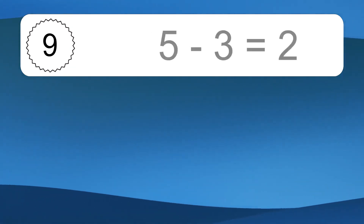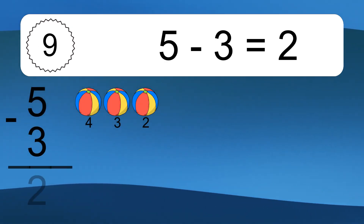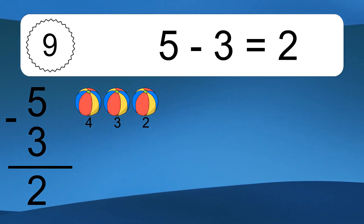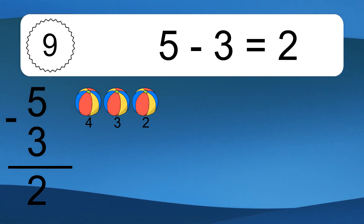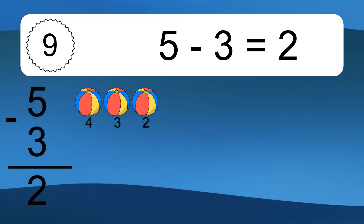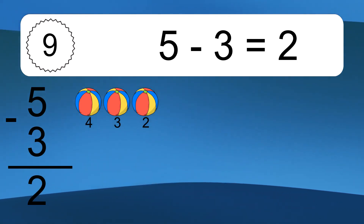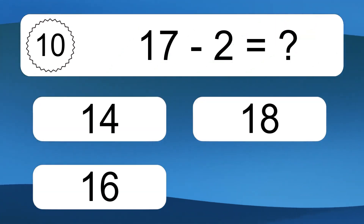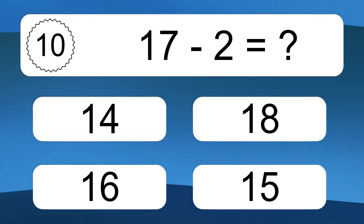5 minus 3 equals 2. Let's count it. 4, 3, 2. 17 minus 2 equals what?